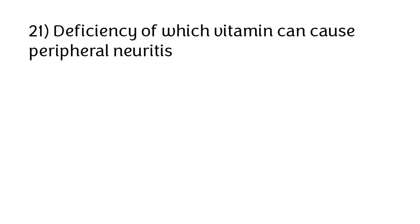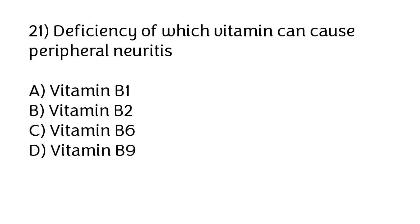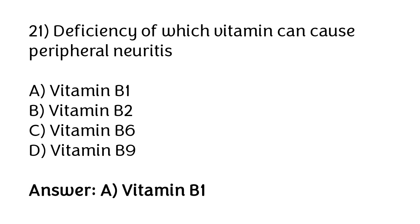Deficiency of which vitamin can cause peripheral neuritis? Options: vitamin B1, vitamin B2, vitamin B6, vitamin B9. The correct answer is option A — deficiency of vitamin B1 can cause peripheral neuritis.